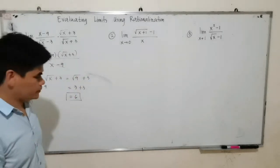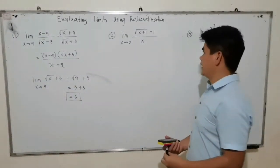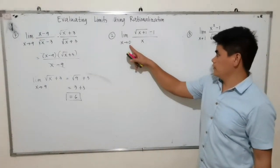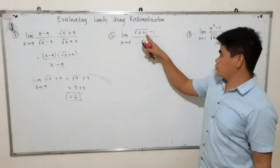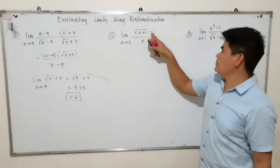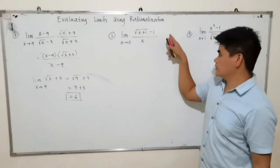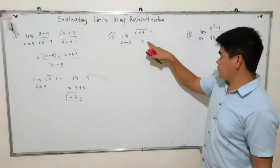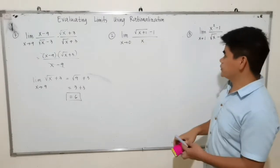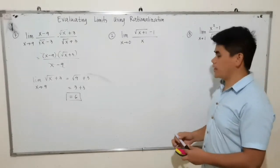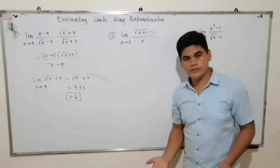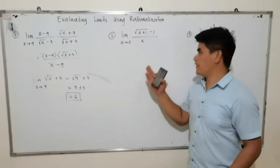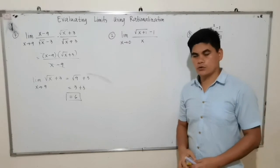Let's proceed to number 2. If we substitute 0, that will be 0 plus 1 — square root of 1 is 1, minus 1 is 0. As x approaches 0, this gives 0 over 0. So again, in this example, we will be multiplying the function by its conjugate.